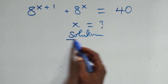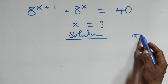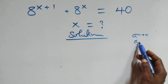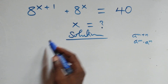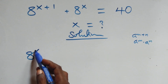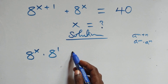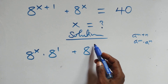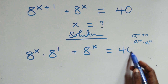What we have here: when we have a to the power n plus n, it is the same thing as a to the power n times a to the power n. Here we have a raised to power x times a raised to power 1, then plus a raised to power x, equals 40.